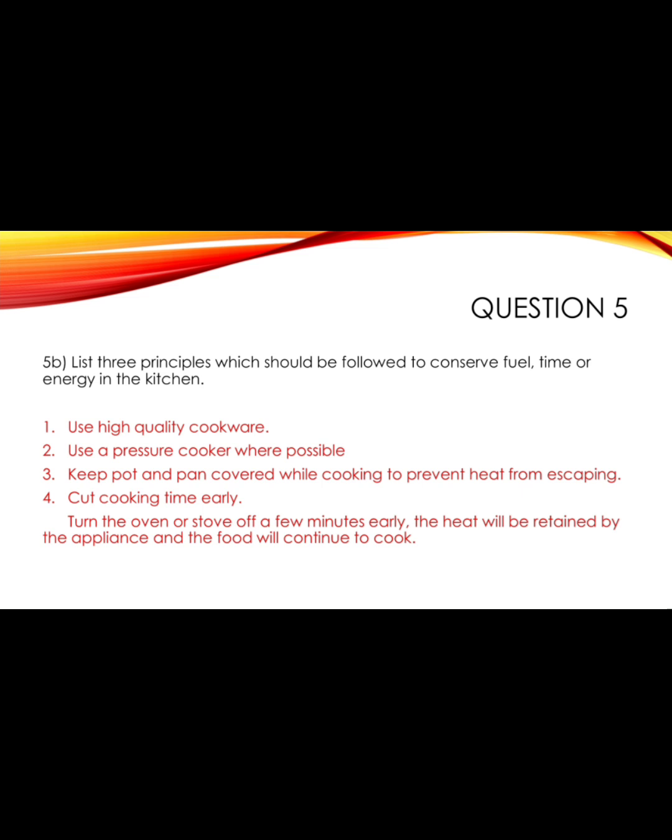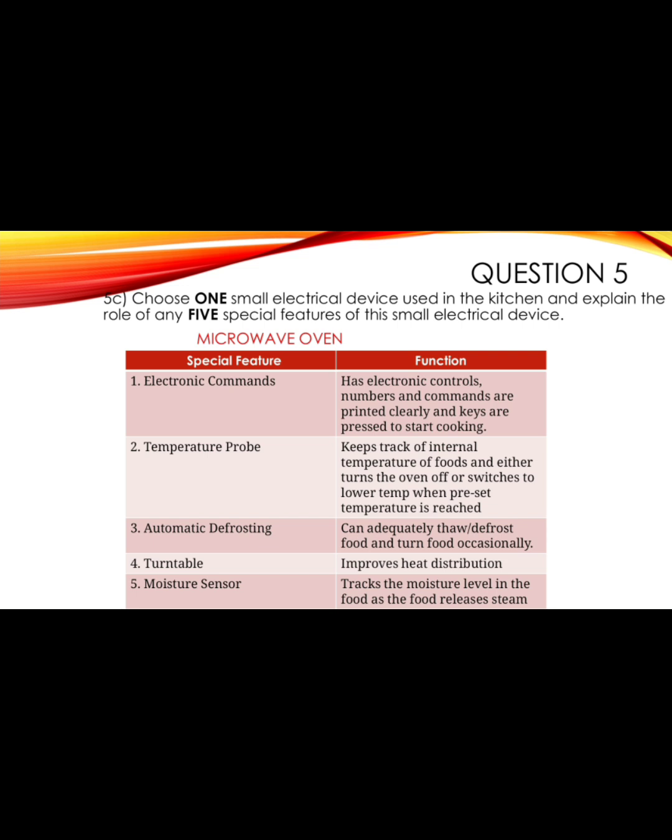Question 5b: list three principles to conserve fuel, time, or energy in the kitchen. First, use high-quality cookware — some materials heat up quickly, reducing cooking time. Second, use a pressure cooker where possible to cut down preparation time. Third, keep pots and pans covered while cooking to prevent heat from escaping. Fourth, cut cooking time short — turn the oven or stove off a few minutes early and the retained heat will continue cooking the food.